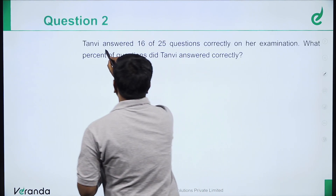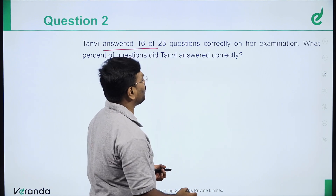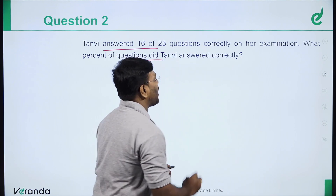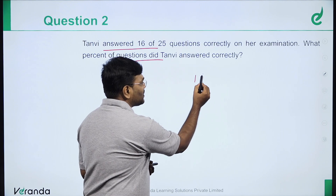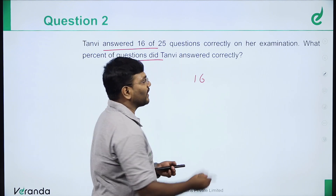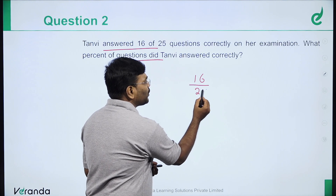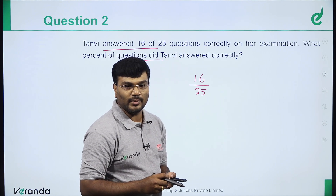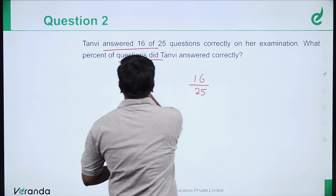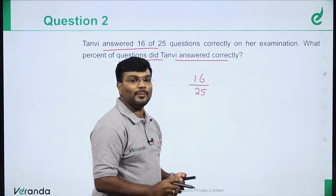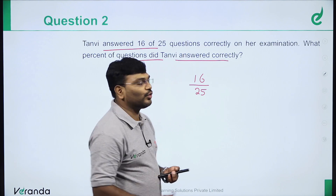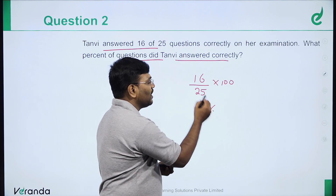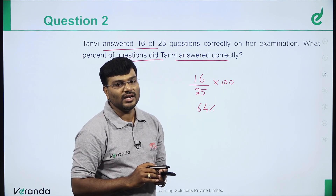Word problem: We answered 16 out of 25 questions correctly in an examination. What percentage of questions did we answer correctly? Total questions is 25 (denominator), correct answers is 16. To convert to percentage: 16 by 25 into 100. 25 fours are 100, so 16 fours are 64. Answer is 64%.